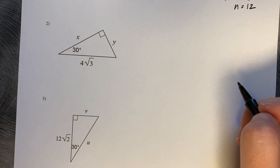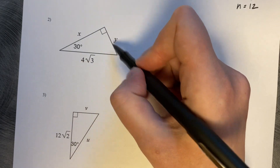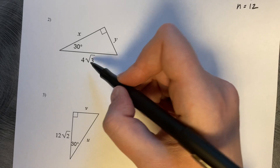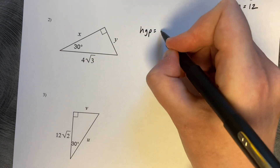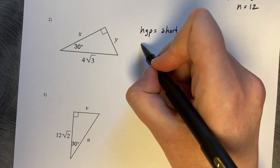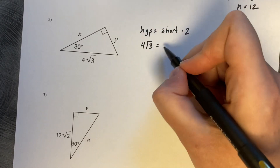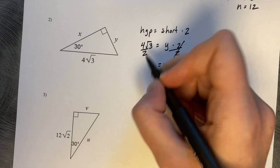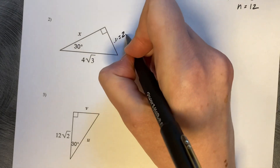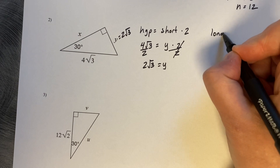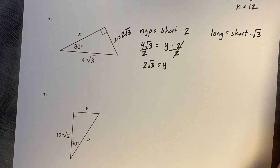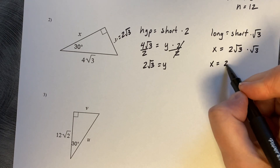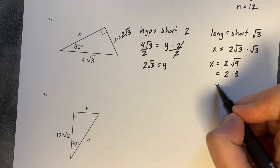Let's try another. The orientation of this one has the 30 degrees up at the top, which means Y is our short leg, X is our long leg, and this time they've provided us a hypotenuse. So we'd like to work backwards to get from the hypotenuse back to our short leg. The pattern is: hypotenuse equals short times 2. We have the hypotenuse 4 root 3 equals Y times 2. Divide by 2, so Y equals 4 divided by 2 — that's 2 root 3. Now we can use that to do the second pattern: long equals short times root 3. The long leg is X, our short leg is 2 root 3 times another root 3, giving us 2 times root 9, which is 2 times 3, so X equals 6.